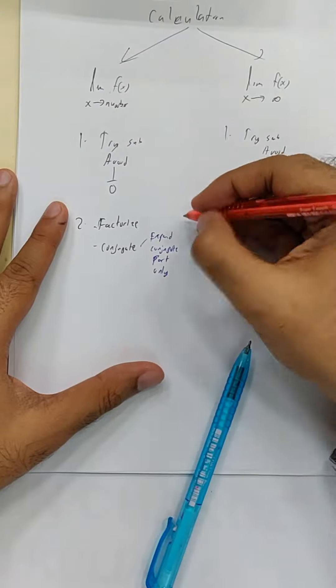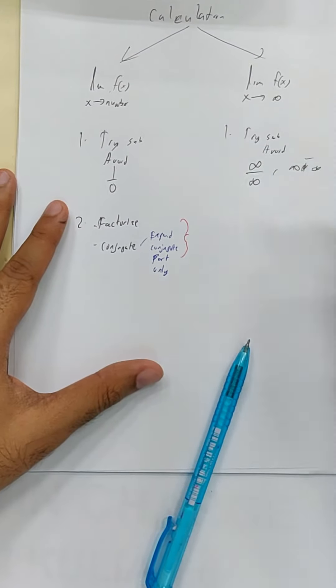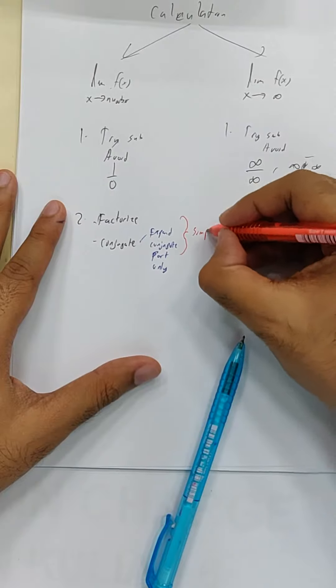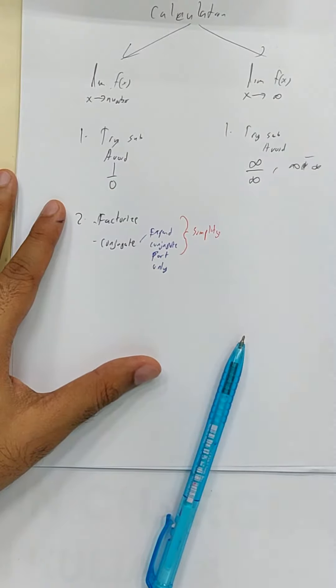What should you do once you factorize and you conjugate? You need to simplify. Okay.